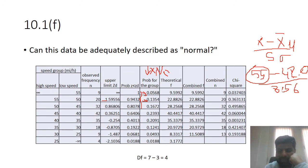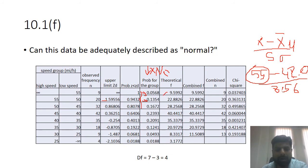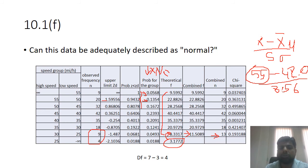There is a check: all theoretical frequency f values must be at least 5. Where values fall below 5, those groups are merged with adjacent groups. The chi-square value for each group is calculated as (n − f)² / f.